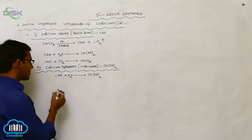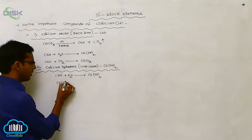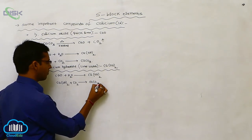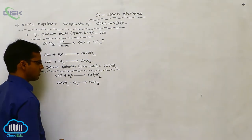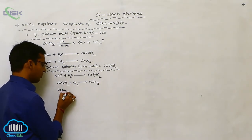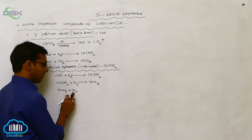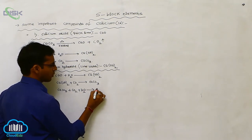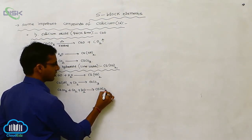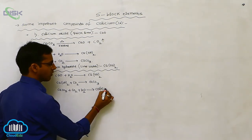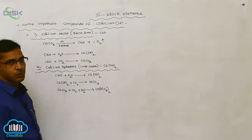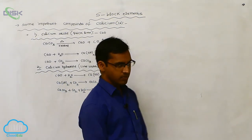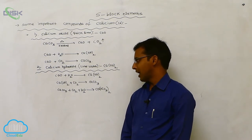For calcium hydroxide, a key reaction involves calcium carbonate. When carbon dioxide is passed through calcium carbonate and water is added, it produces calcium bicarbonate, Ca(HCO₃)₂ — because calcium is Ca²⁺ and bicarbonate is HCO₃⁻. These are the reactions that take place in the chemistry of calcium hydroxide.